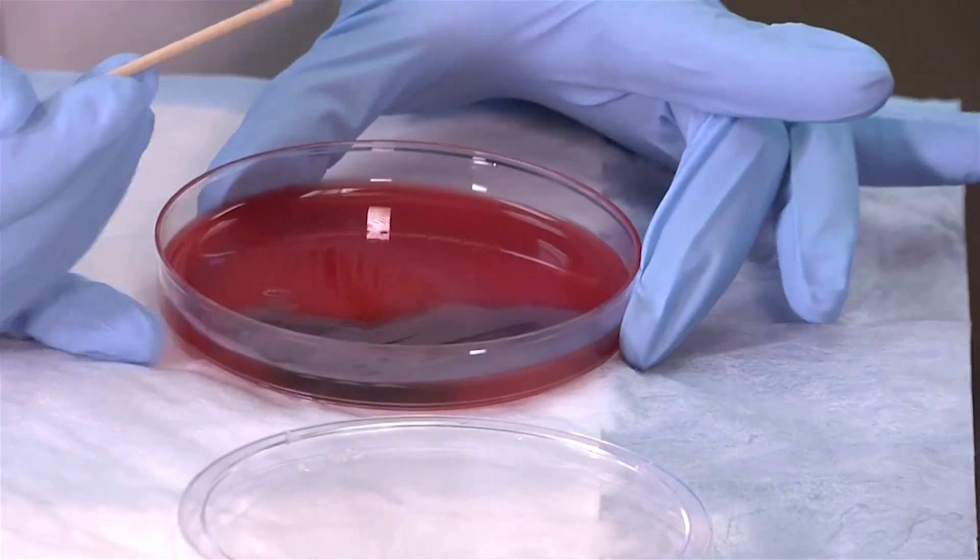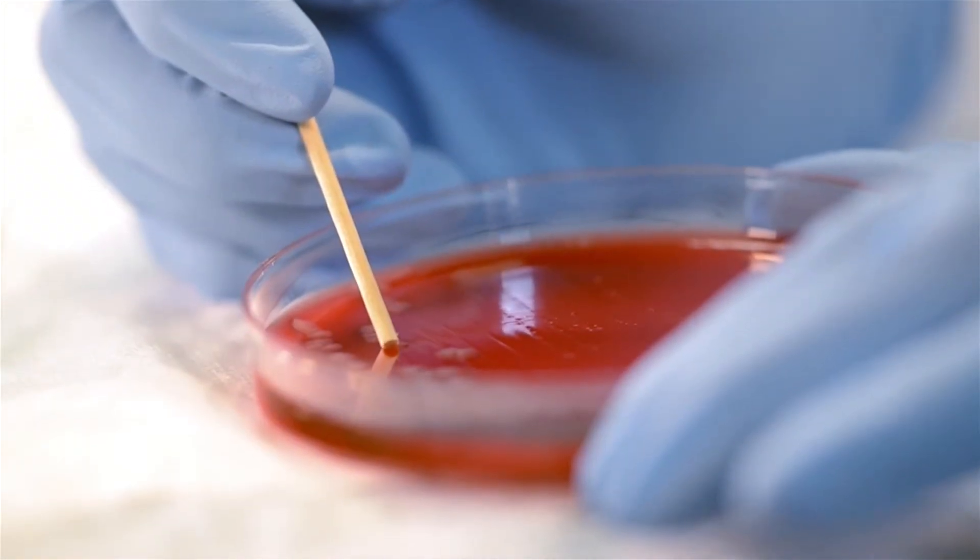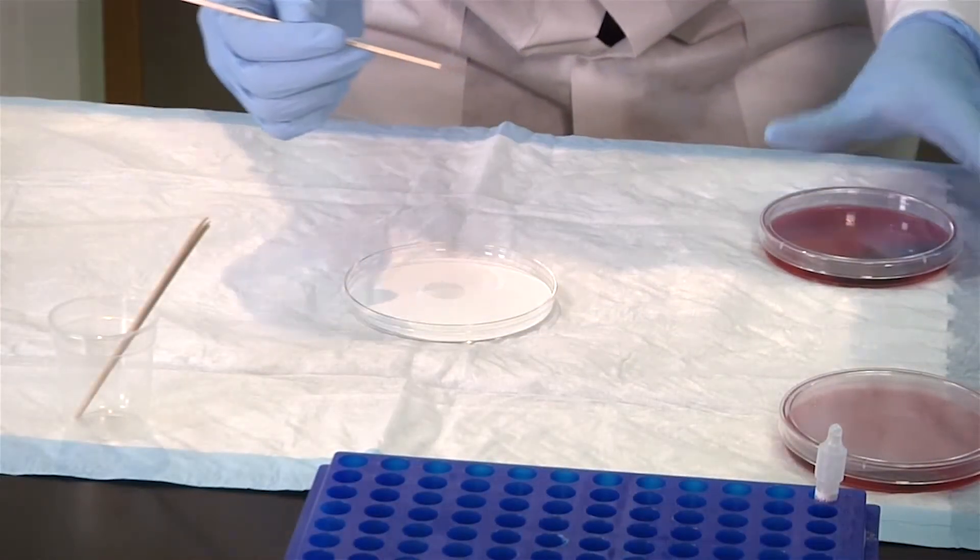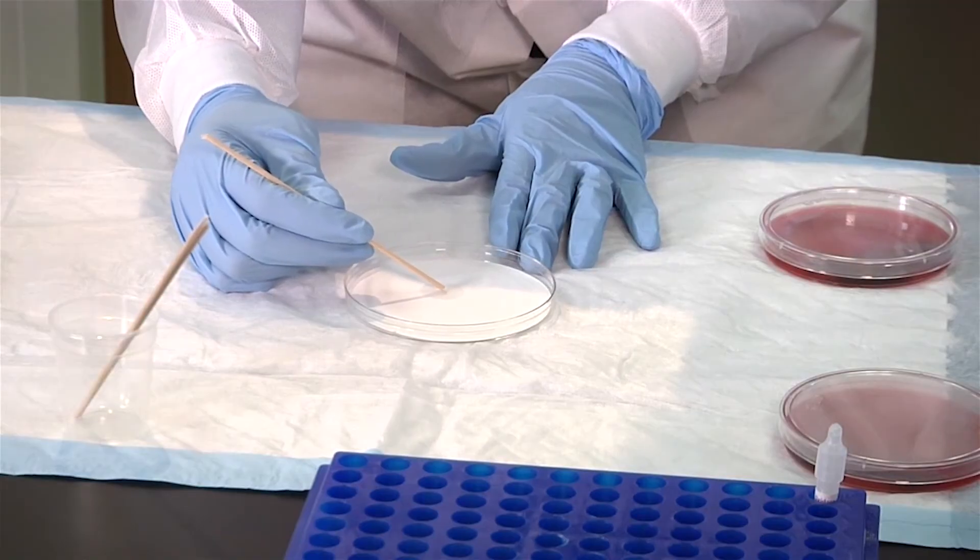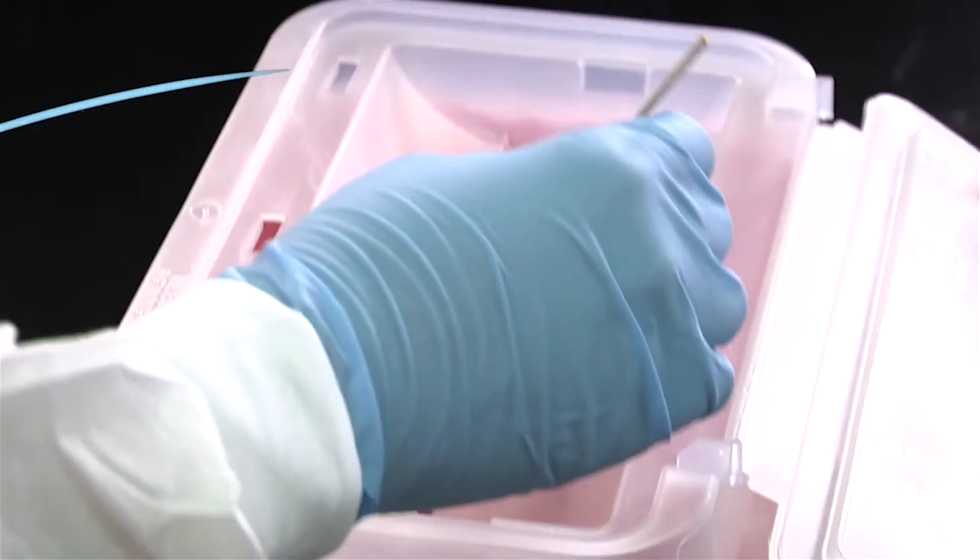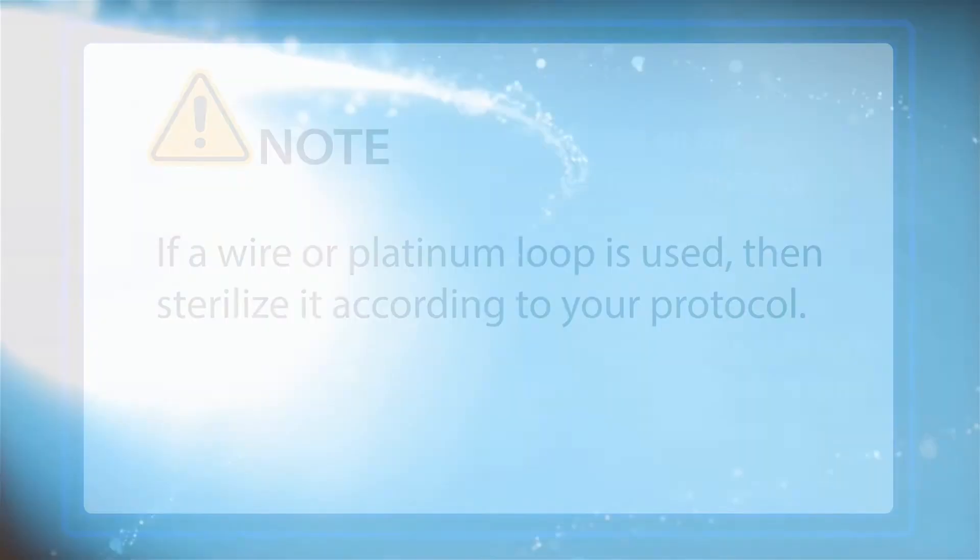To test the colony, pick an isolated colony with a stick, wire, or loop and smear it onto the reagent-dampened filter paper. Place the stick or plastic loop into the sharps container.